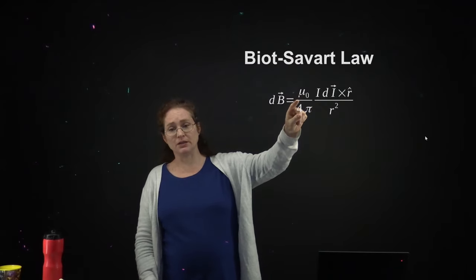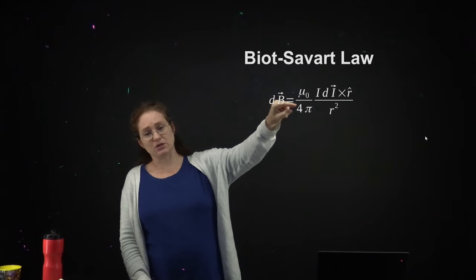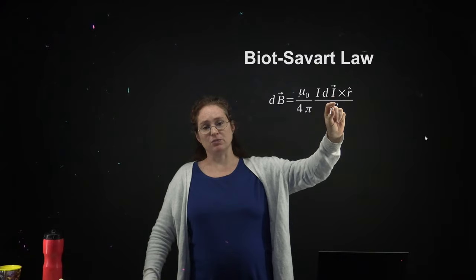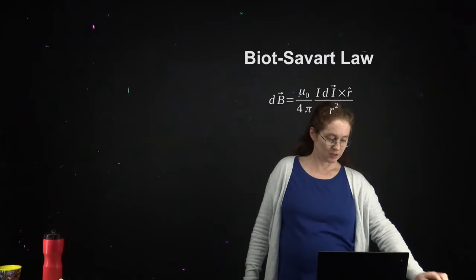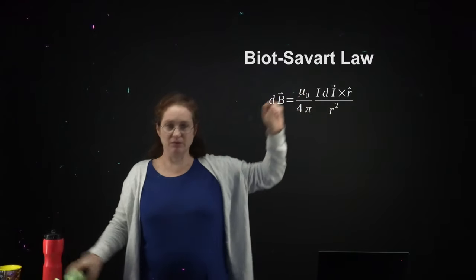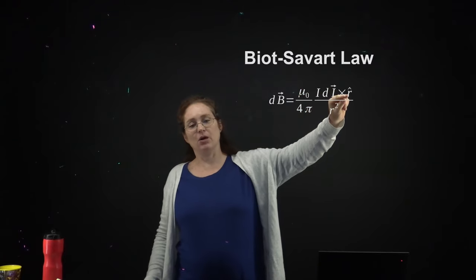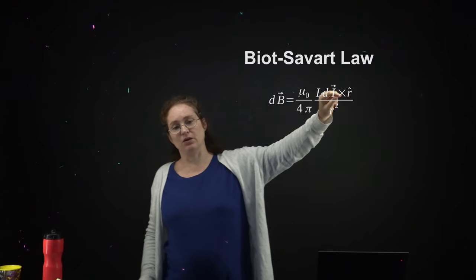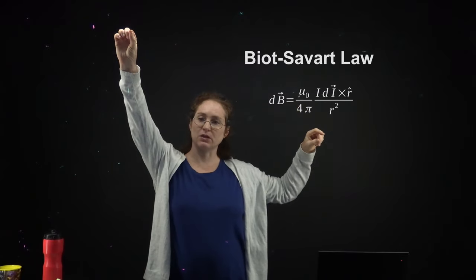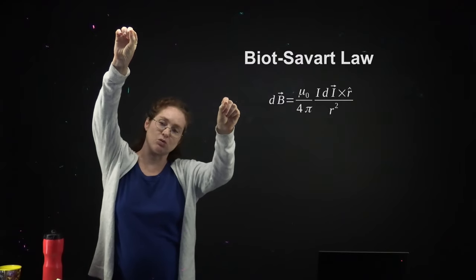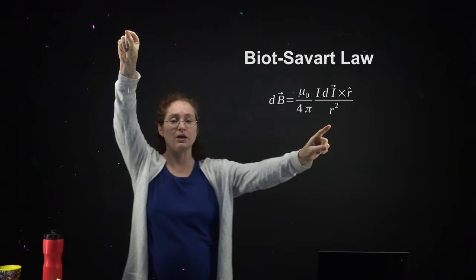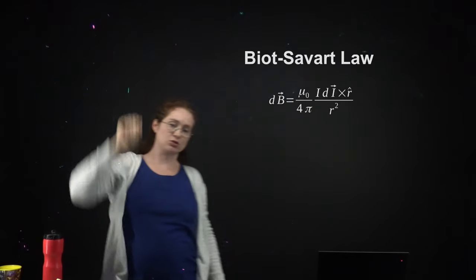The formula has mu naught, a physical constant, divided by 4 pi. This is the current. This is a small segment of the wire — that should read DL — and it has a cross product with the direction to the point. So this is from the point of the wire creating the magnetic field to the point where you are. R-hat points from that point to the other point, and R is the distance between those two points, squared.